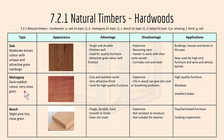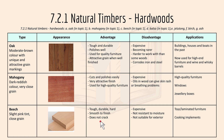Mahogany has a dark reddish color and very close grain, and it cuts and polishes easily. Its disadvantage is that it's expensive, but it's used for high quality furniture. Beech wood has a slight pink tint and a close grain. It's tough, durable, hard and smooth to finish. It's expensive and not resistant to moisture, and it's typically used in toys, laminated furniture, and cooking implements.